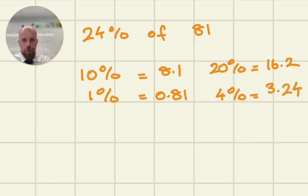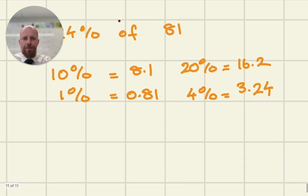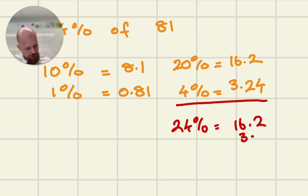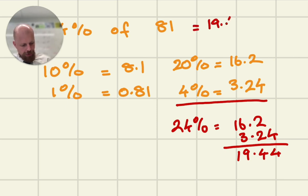Finally, to make 24%, if I simply add the 20 and the 4% together, 24% will be 16.2 plus 3.24. Don't forget to line the decimal places up properly. Add them together, I get 19.44.